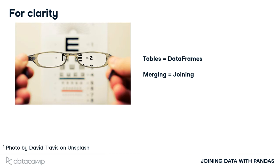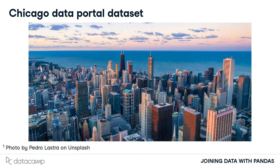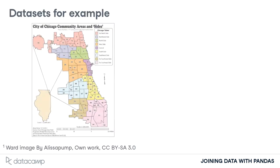To help us learn about merging tables, we will use data from the City of Chicago data portal. The City of Chicago is divided into 50 local neighborhoods called wards. We have a table with data about the local government offices in each ward.